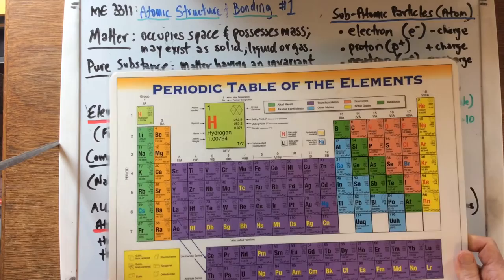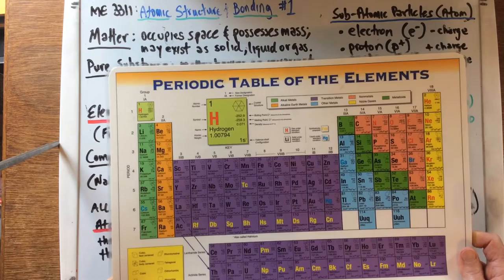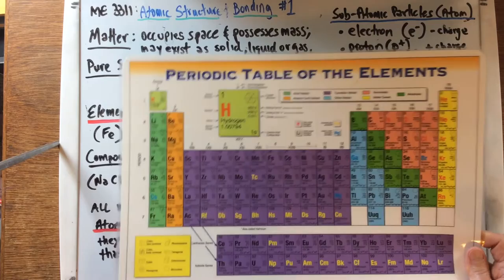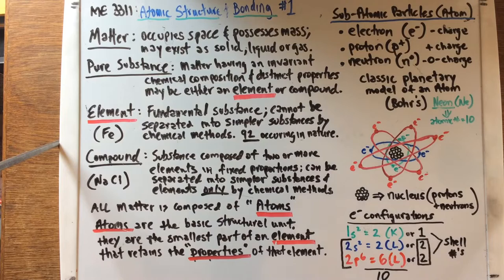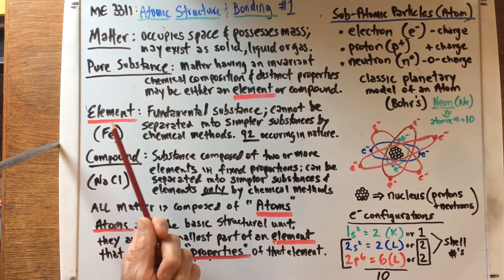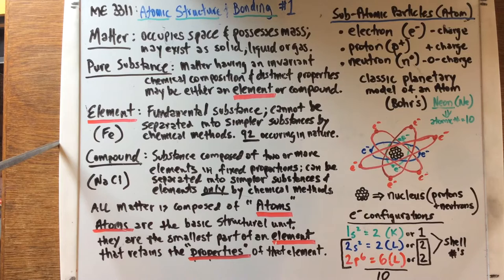An element is the fundamental substance that cannot be broken down into simpler substances by any chemical methods. Elements are on the periodic table, which we'll cover in the next video — I picked iron as an example. There are about 92 elements occurring in nature; many more exist but are synthesized. A compound is a substance composed of two or more elements in fixed proportions, separable only by chemical methods — a good example is sodium chloride, or table salt.